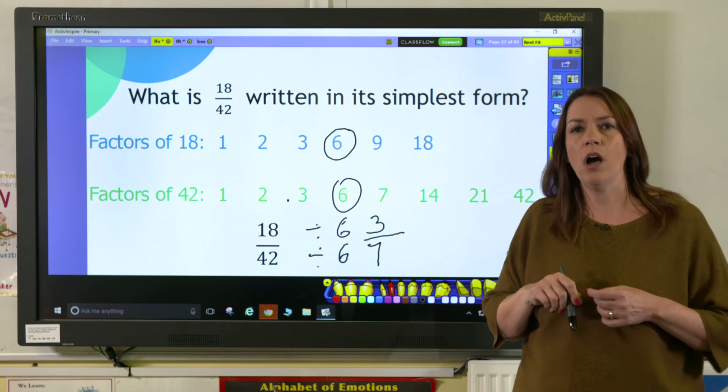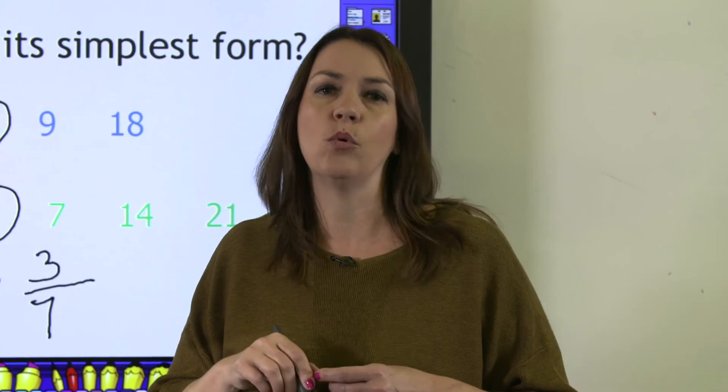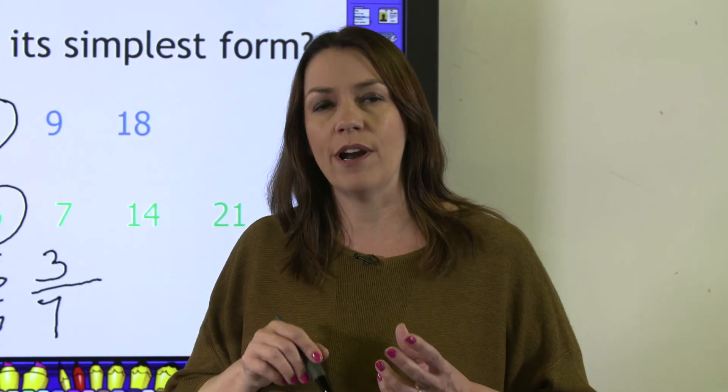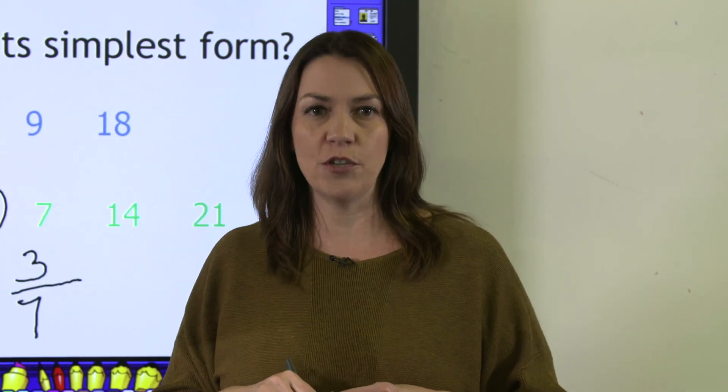So why are we finding the highest common factor? Why not just any factor? Well, if you divide by a larger number, you're going to get a smaller answer, so we know that we've got the fraction written in its simplest form. So there you go, that's how to find the highest common factor of two numbers.